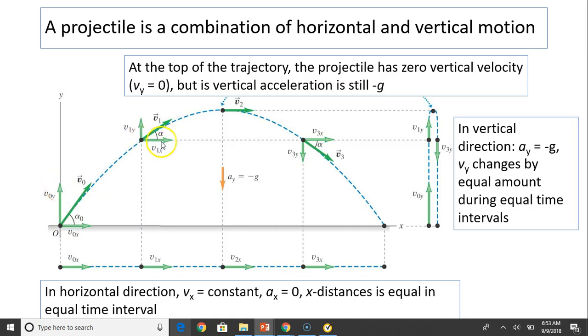This v0 is v0x plus v0y. It's a vector addition. At t equals 1, v1 equals v1x plus v1y. At the very top, v2y equals 0, so v2 equals v2x. It's symmetrical.